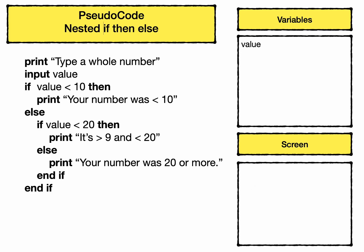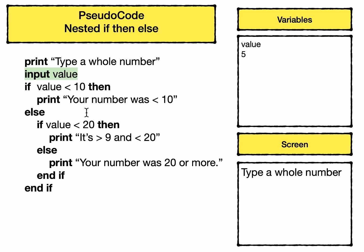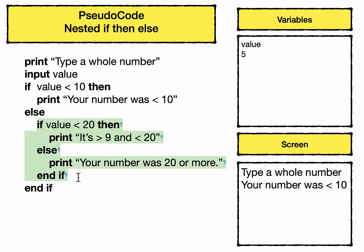Now I'm going to look at something called a nested if. When you nest an if, you include it inside another if statement. This section here has replaced one line of code — this whole section will be executed if the boolean expression is false, so if the value is not less than ten, all of this will execute. Let's assume the number typed in was five. This statement would be true and so this would be printed to the screen. Because value is less than ten, none of this second part will execute, so the screen will look like this.